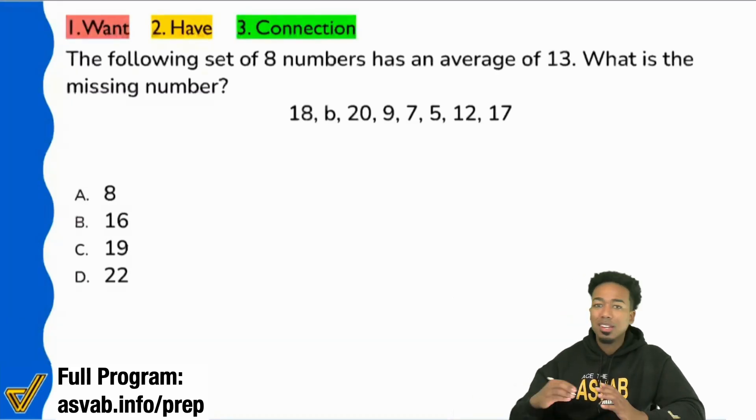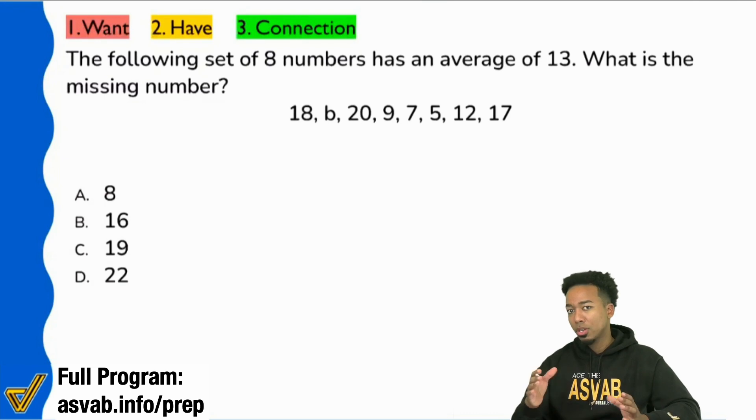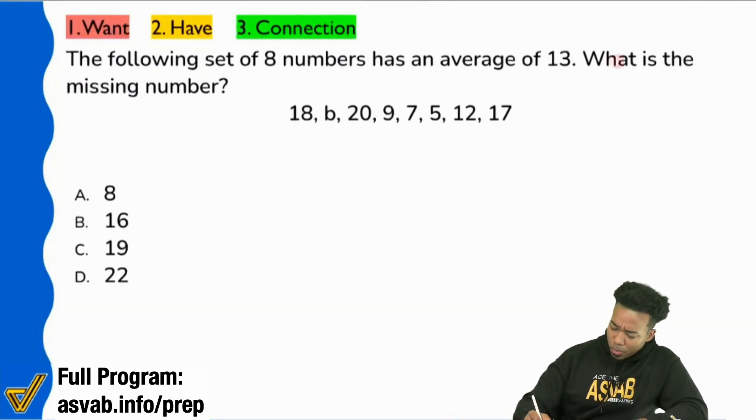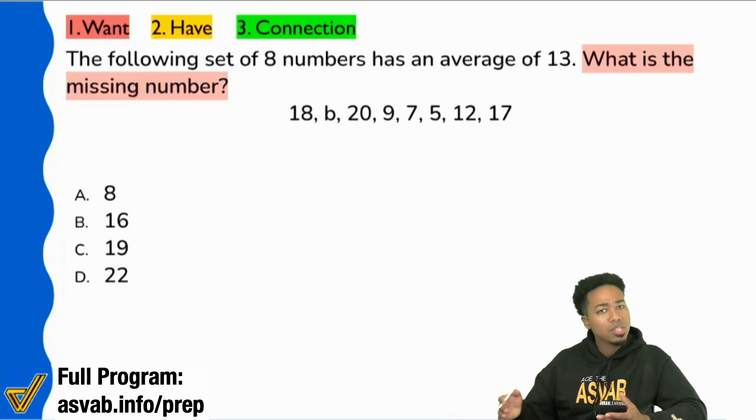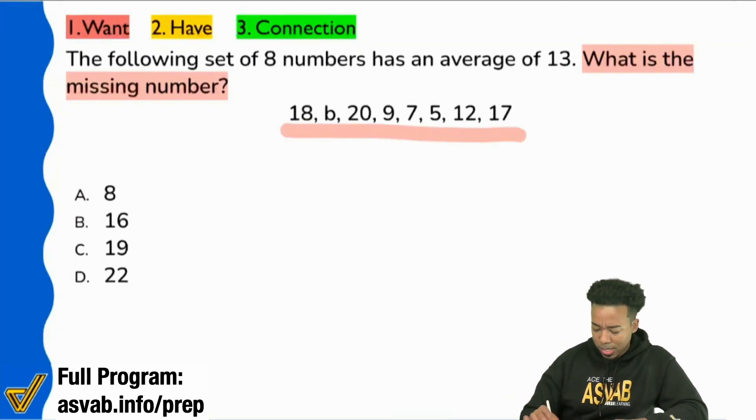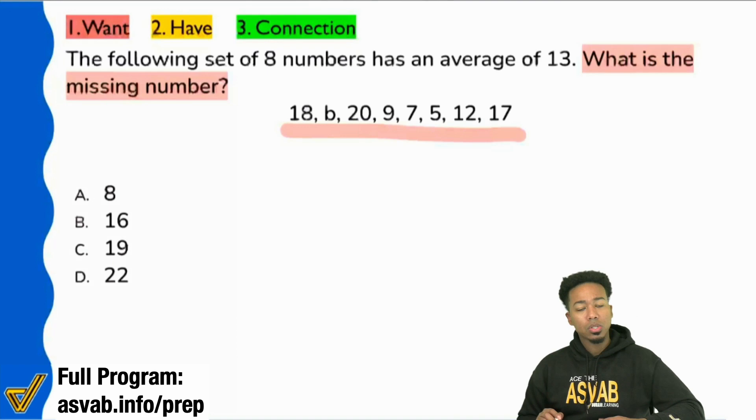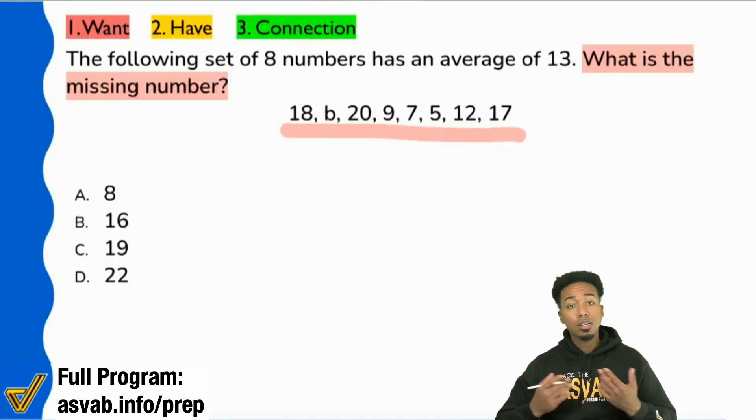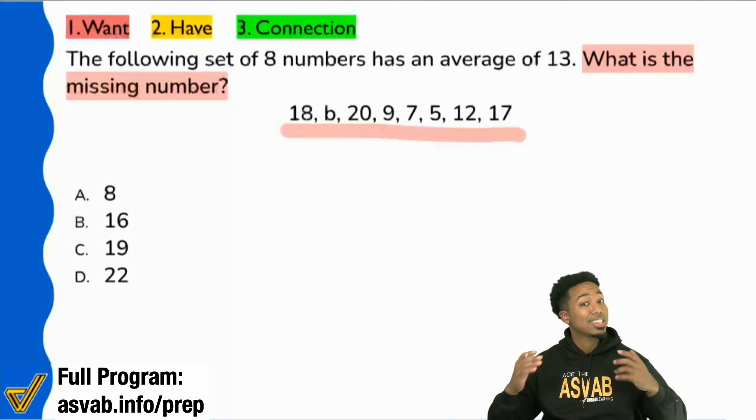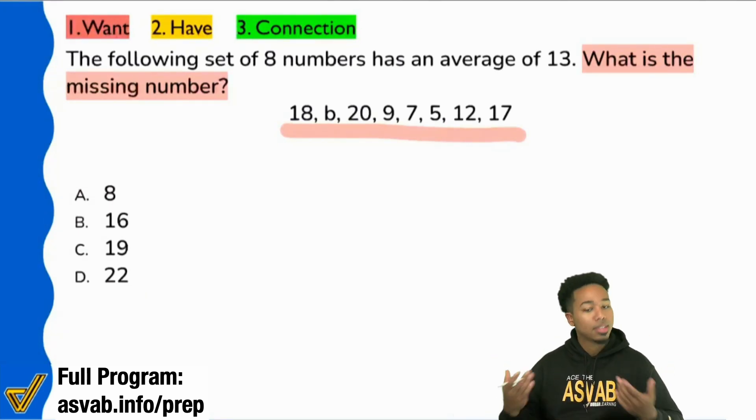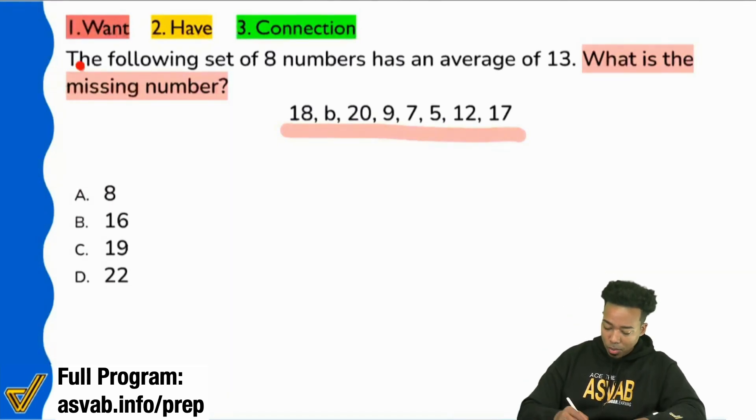Step one. Again, treat this like a brand new problem. Don't get into the mode of memorizing. Let's first make sure that we're looking for a missing number. And it says, yeah, it does. What is the missing number? And we see that missing number is in a list. So typically they're going to have to give you some information about the missing number or the list that it's in. And they do that. It says the following set of eight numbers has an average of 13. What is the missing number?